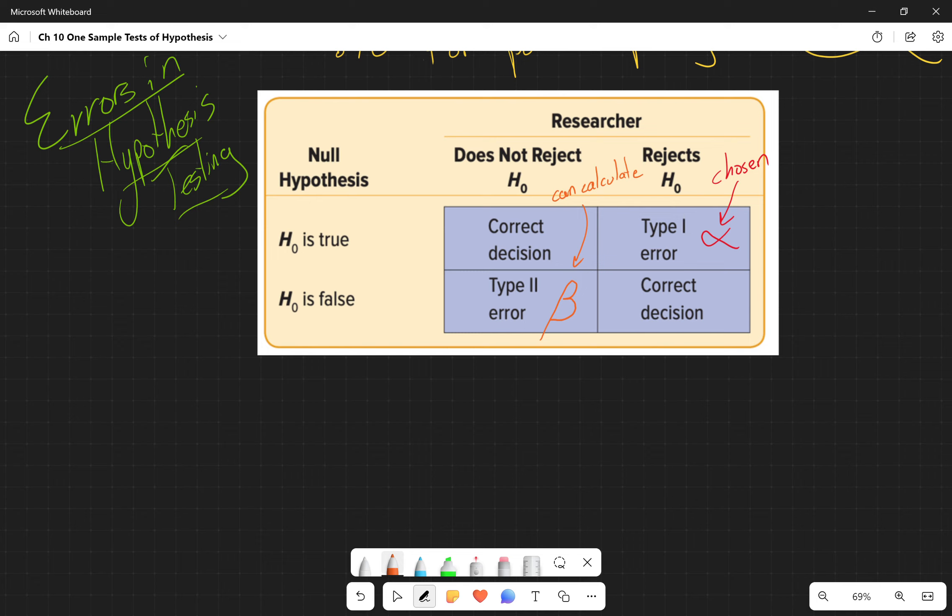It's not likely that a Type II error will occur. It's possible due to random sampling and that process of random sampling from a population.